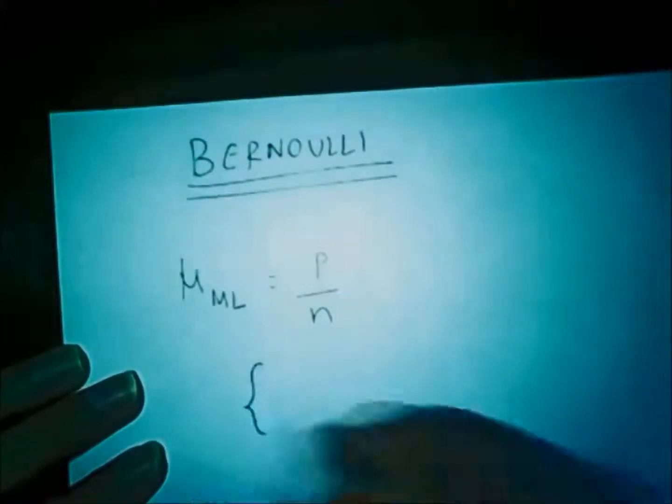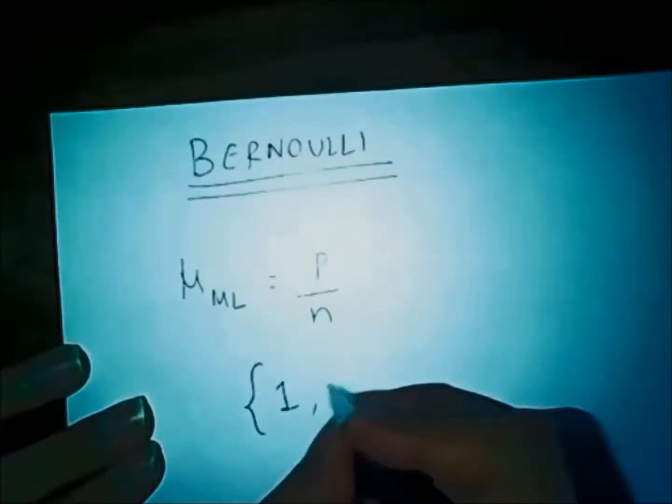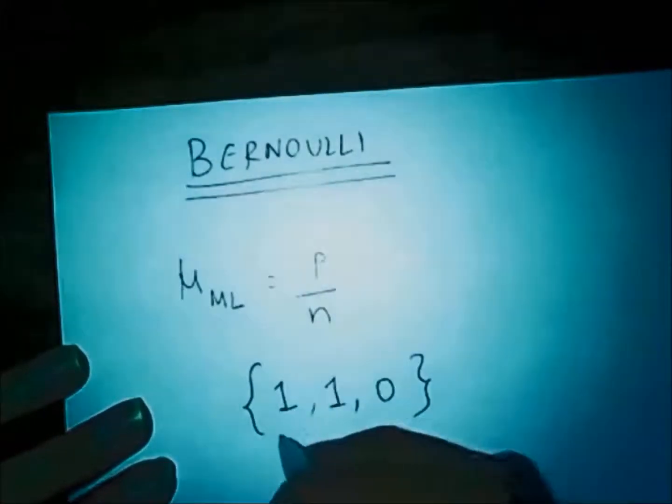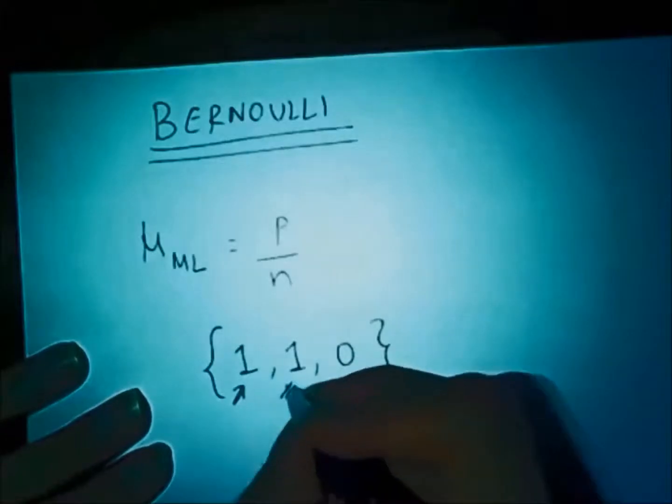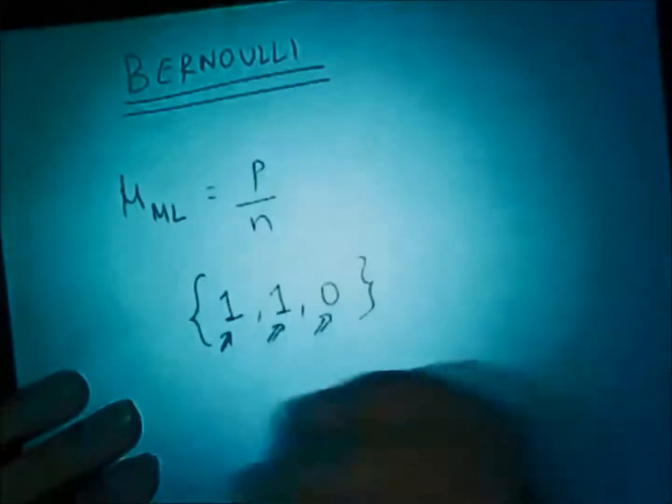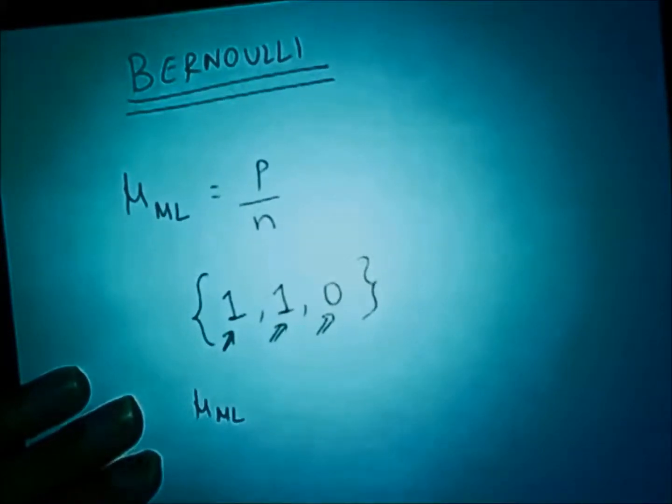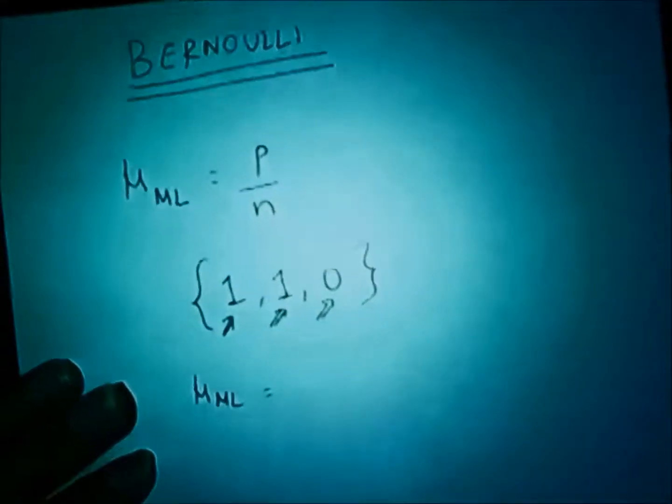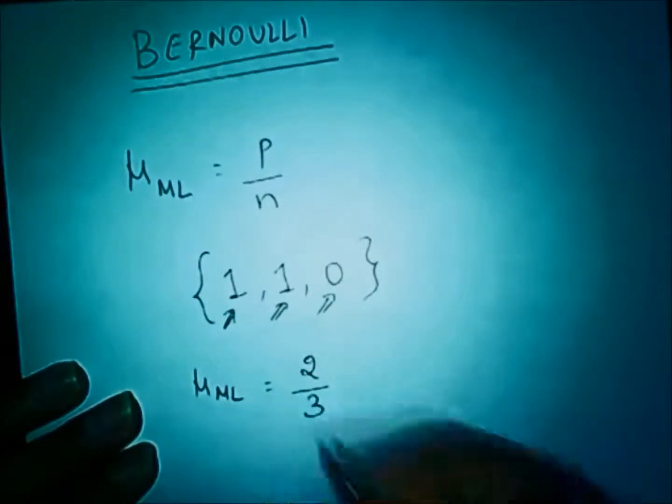So let us assume that we had a data where we got 1, 1, and 0. This would mean that I got the head in the first attempt, head in the second attempt, and tail in the third attempt. So my mu_ML for the fourth attempt, if I want to estimate the mu with which I am going to get a head, it is going to be P, which is the sum of all the heads, total number of heads that I have obtained, which is going to be 2 over N.